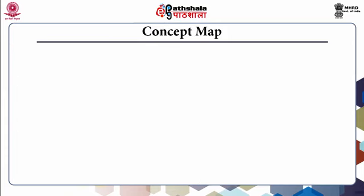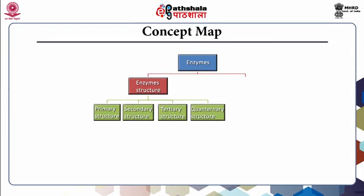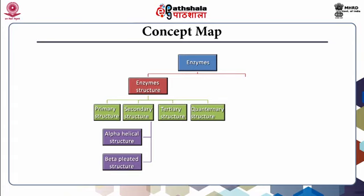This shows the concept map that will be followed in this lecture. We will first study what the basic types of enzyme structures are — that is primary, secondary, tertiary, and quaternary. Next, we will look at these structures in detail, and at the end we will also briefly look at various types of methods which can be used for enzyme structure analysis.